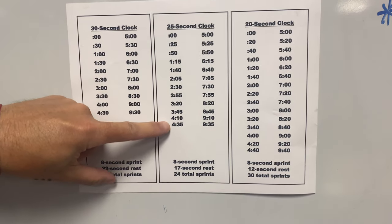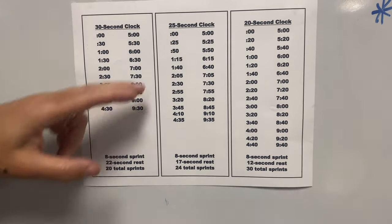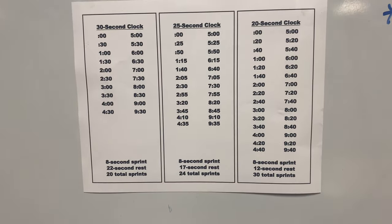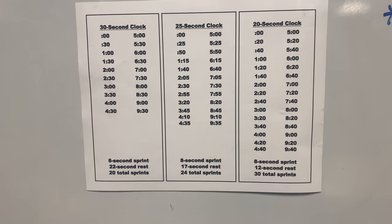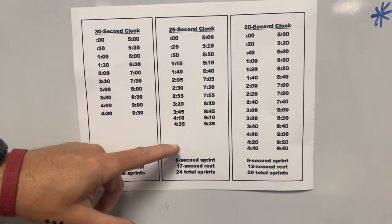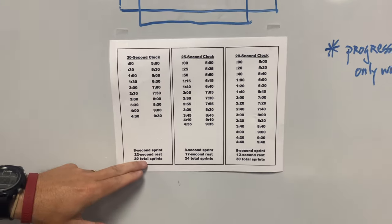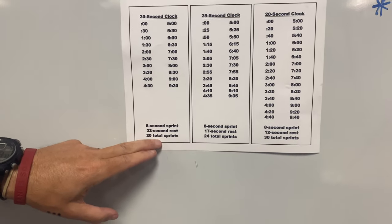115 and so forth and so on. You basically have to have these times and your clock, your phone in your hand to be able to run 10 minutes worth. Basically, if you look at the first one, if you can do 10 minutes worth, you're going to do 20 total sprints.